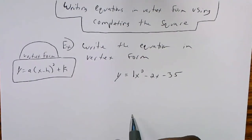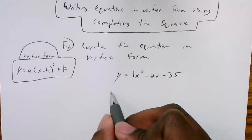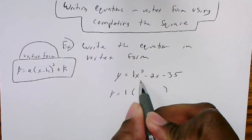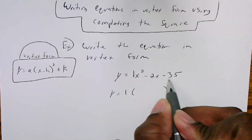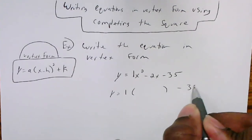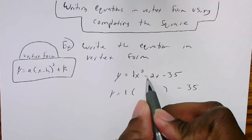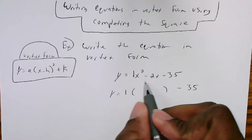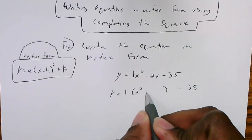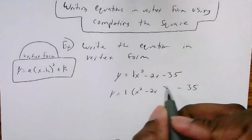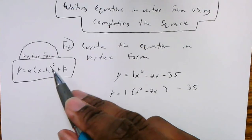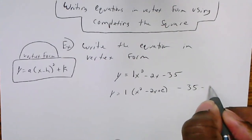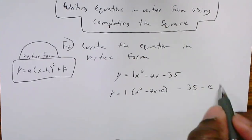In this case the a value is 1, so since a equals 1 I can rewrite it as y equals 1 times, and in the parentheses I'm going to rewrite just the x part. The constant will go on the end: subtract 35. The parentheses will just contain the terms with x — that's x squared minus 2x. I'll then add plus c inside and subtract c outside to keep things balanced.